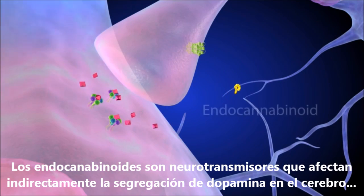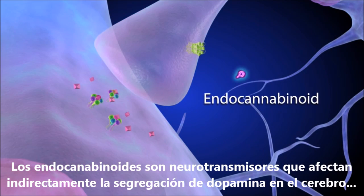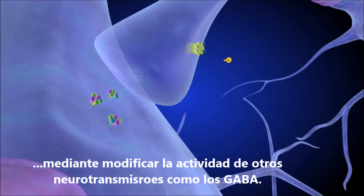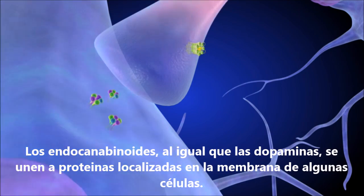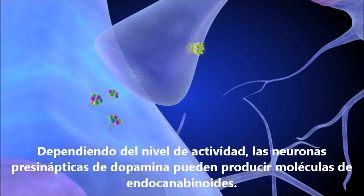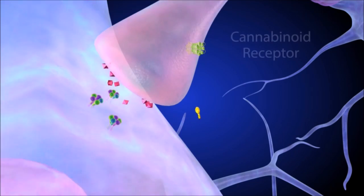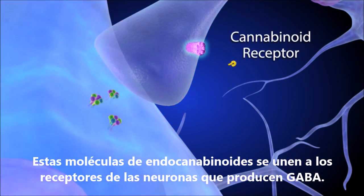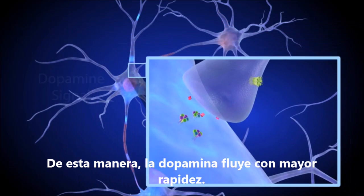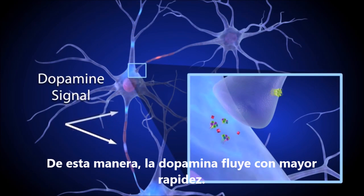Endocannabinoids are neurotransmitters that can indirectly affect dopamine signals by modifying the activity of other neurotransmitters such as GABA. Endocannabinoids, like dopamine, bind to specific receptor proteins located on the surface of some cells. Depending on its current level of activity, the presynaptic dopamine neuron can produce endocannabinoid molecules. These molecules bind to cannabinoid receptors on the adjacent GABA neuron, reducing the amount of GABA it releases. Inhibiting GABA neurons in this way boosts the dopamine signal in the reward synapse.